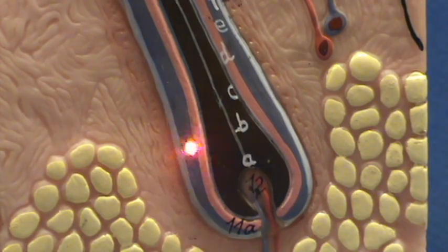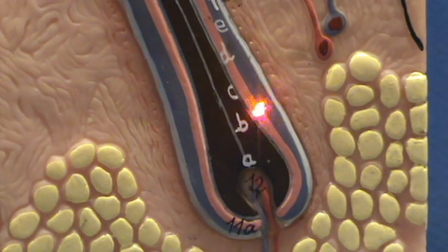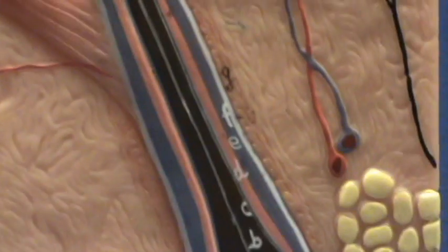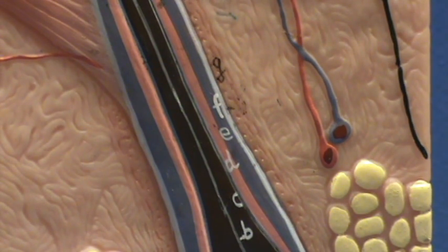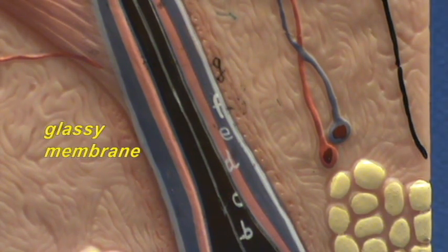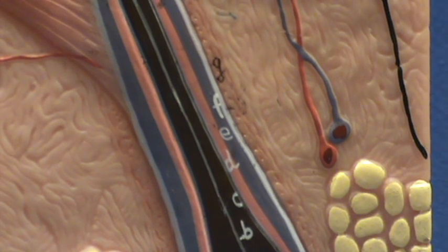You can see this white line surrounds the external root sheath. And it is also labeled. If you go further up, you can see there is an F that is meant to represent the glassy membrane. The glassy membrane represents a continuation of the basement membrane of the epidermis.